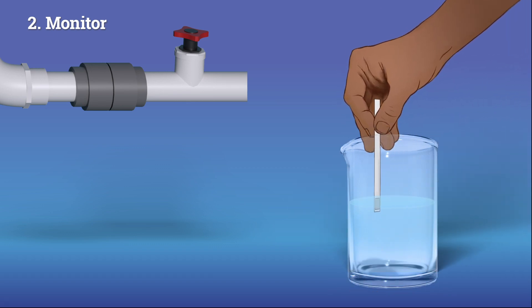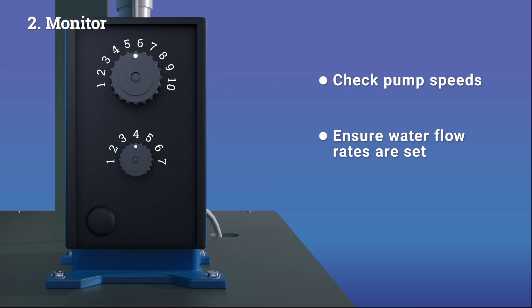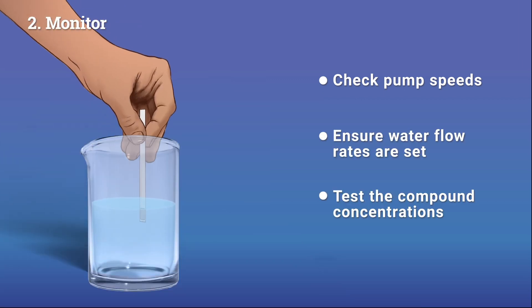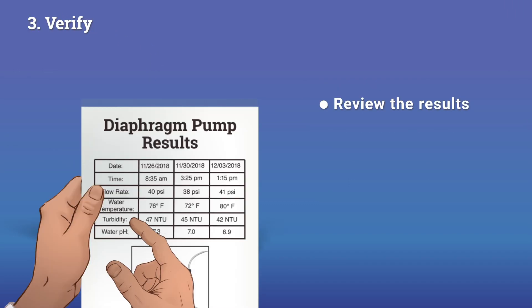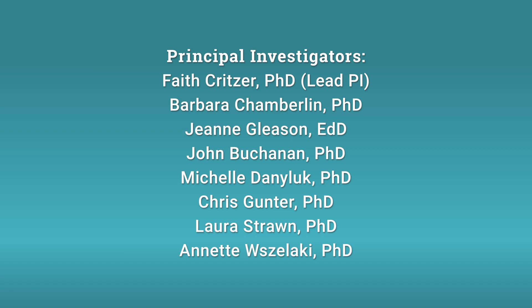Examples of monitoring events include checking diaphragm and peristaltic pump speeds, water flow rates, and the concentration of the compound in the treated water. Verify that your system is working as expected by reviewing the records to make sure the proper flow rates and injection speeds were maintained during treatment. For example, by checking your water pump and diaphragm pump flow rates.